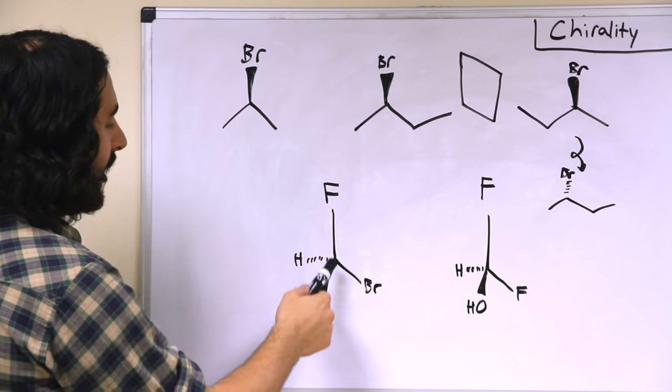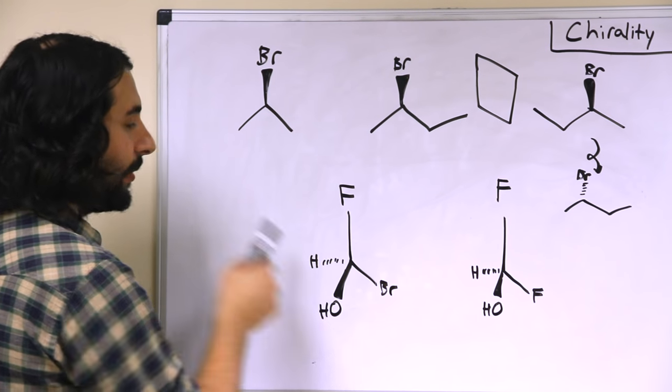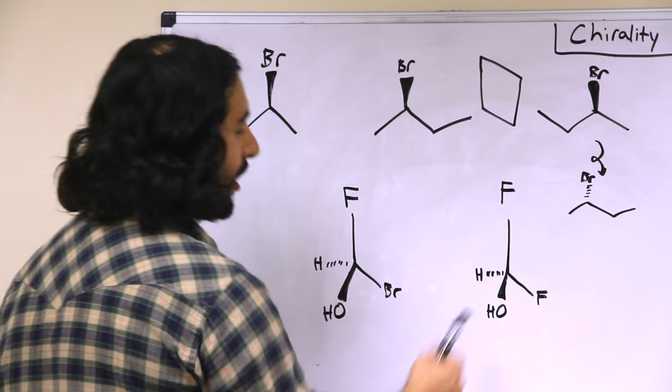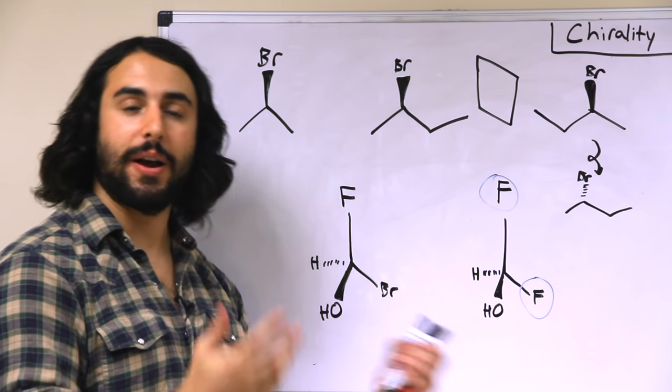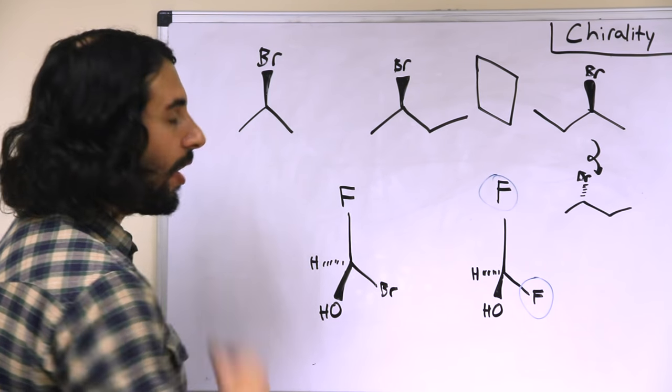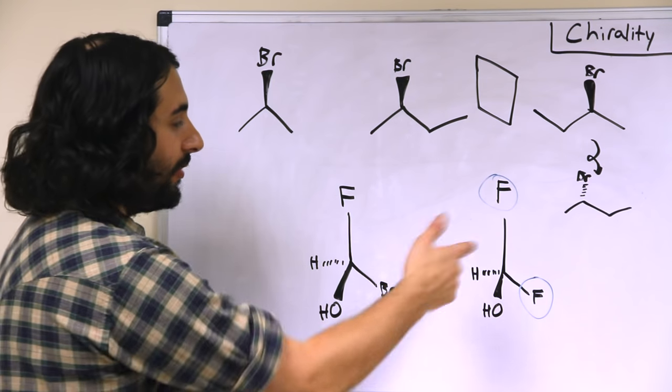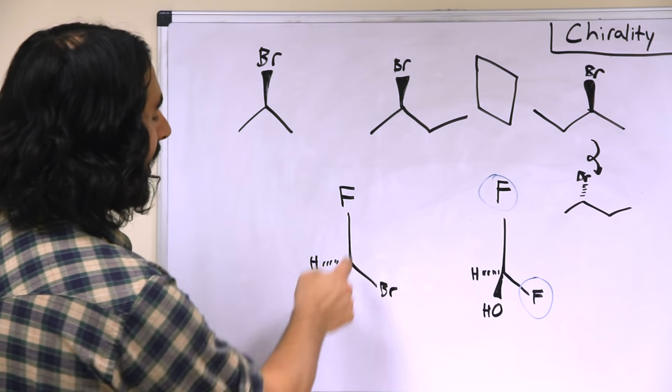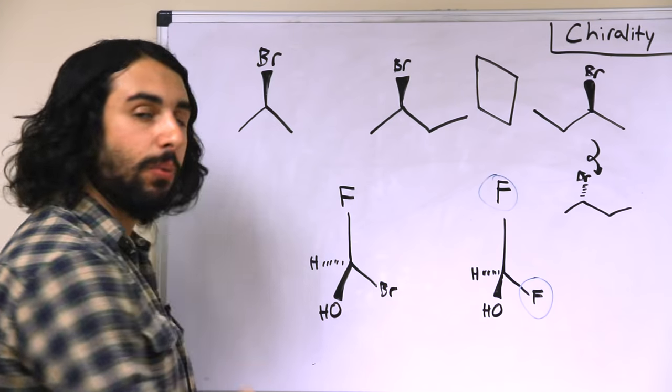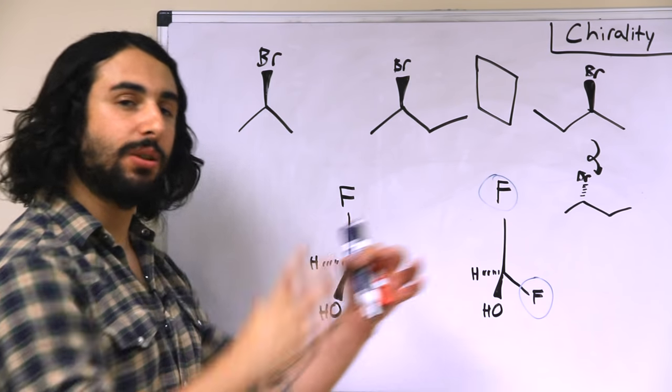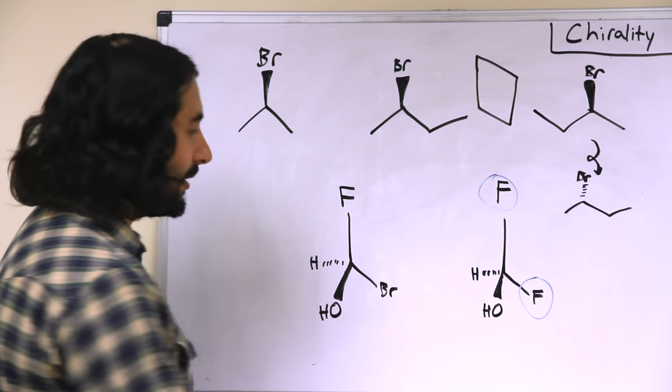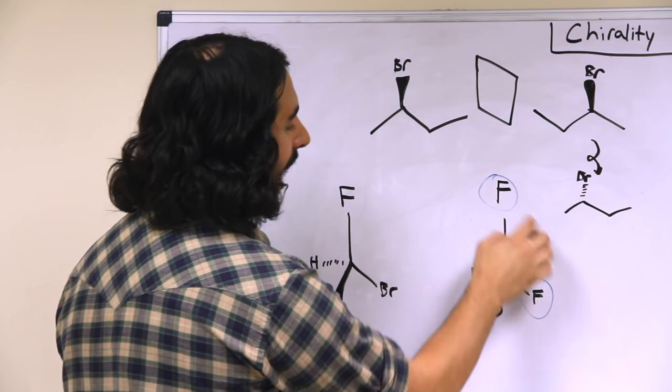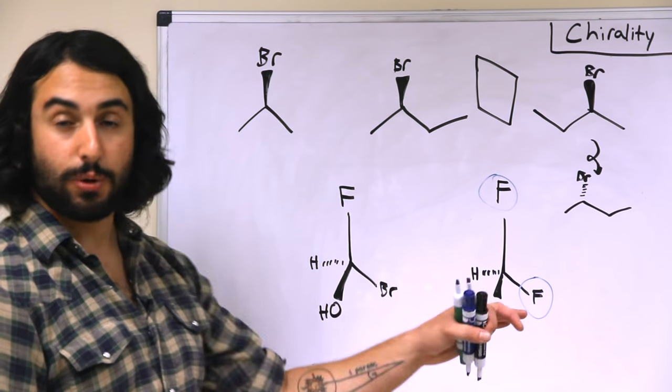Likewise, over here, this is a carbon with four different groups. This is a similar molecule, but two of the groups are the same. We have two fluorine atoms. So if you at home want to go ahead and check, you could draw the mirror images of both of these compounds, and you could see that this is chiral because there is no way to rotate its mirror image so as to place it upon the original and have it line up flawlessly.